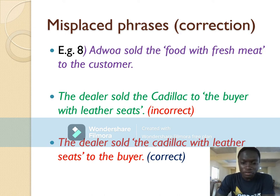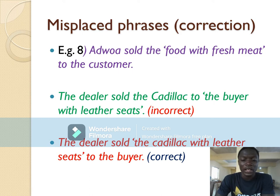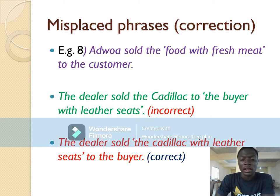Another example of a misplaced phrase: 'The dealer sold the Cadillac to the buyer with leather seats.' This suggests the buyer has leather seats, which makes no sense. The correction is: 'The dealer sold the Cadillac with leather seats to the buyer.' Note: the Cadillac is a brand of automobile.